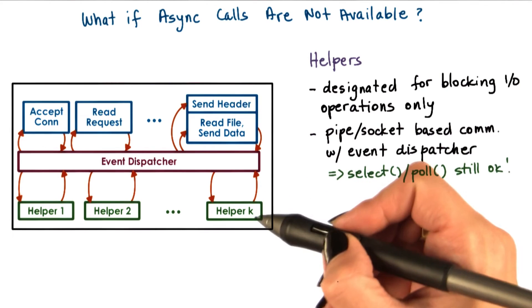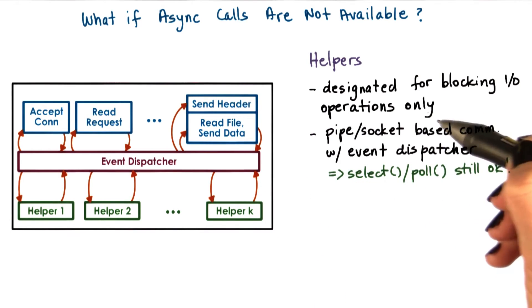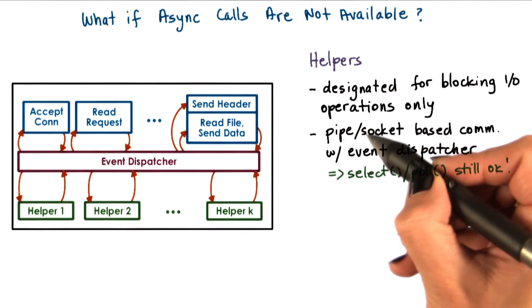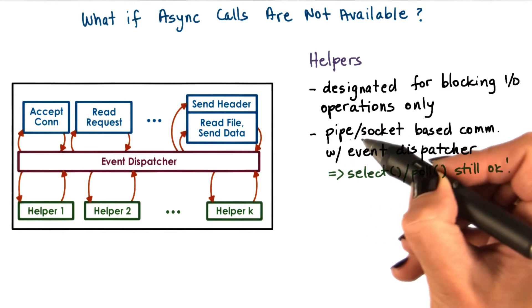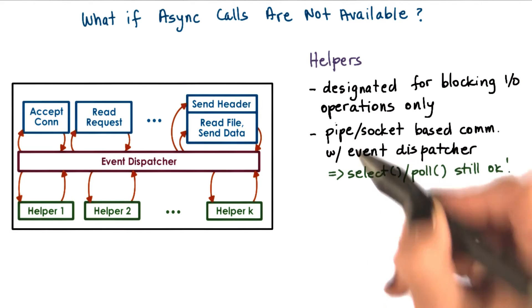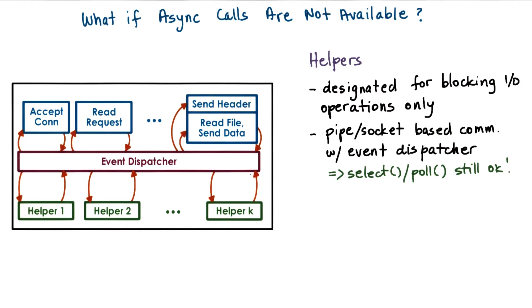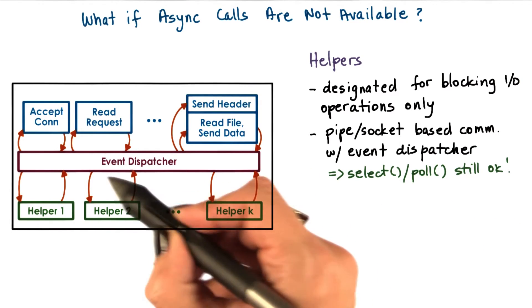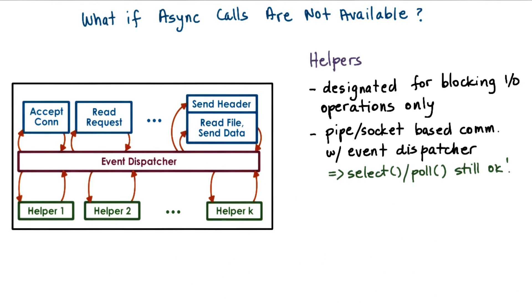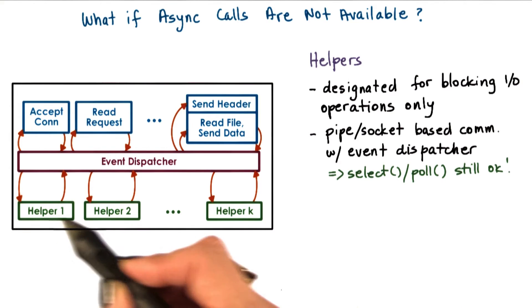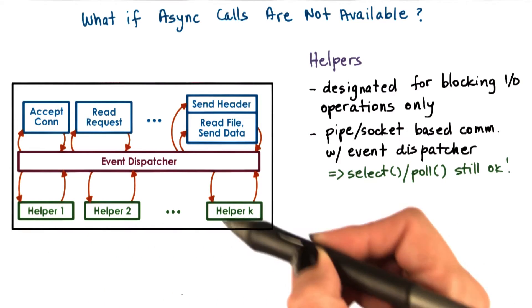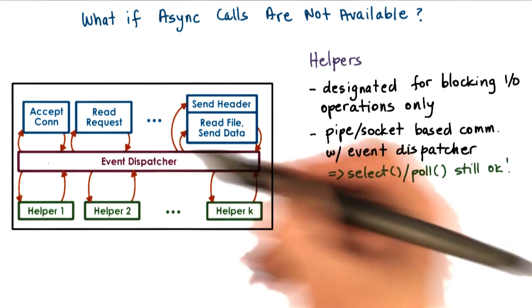The communication with the helper can be via a socket-based interface or via another type of messaging interface available in operating systems called pipes. Both of these present a file descriptor-like interface, so the same kind of select or poll mechanism can be used for the event dispatcher to keep track of various events occurring in the system.